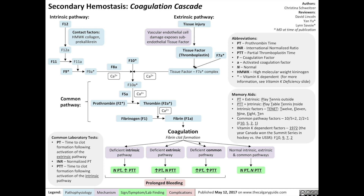Where this is clinically relevant is in the measurements we use to check for abnormalities in the clotting pathways. The extrinsic pathway is measured by the prothrombin time test, measured from the time that tissue factor is inserted into the mixture to the time the clot forms. Deficiencies in the extrinsic pathway will result in an increased prothrombin time. The prothrombin time test takes into account tissue factor, factor 7, calcium, factor 10, factor 5, prothrombin (factor 2), and fibrinogen (factor 1). Defects in any of the above factors prolong the prothrombin time.